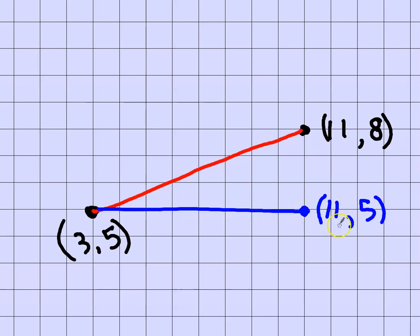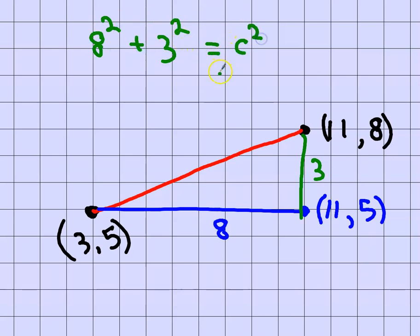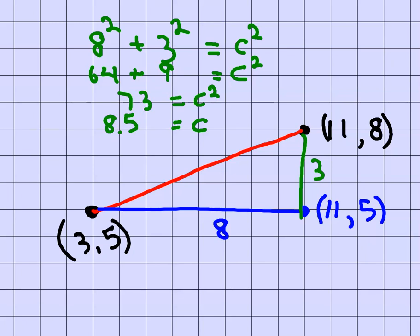11 minus 3 is 8 for the horizontal leg. And 8 minus 5 is 3 for the vertical leg. So now I've got two sides of a right triangle, and using the Pythagorean theorem — the two short sides squared has to equal the long side squared — that's 64 plus 9, which makes 73. The distance is the square root of 73, which is about 8.5.